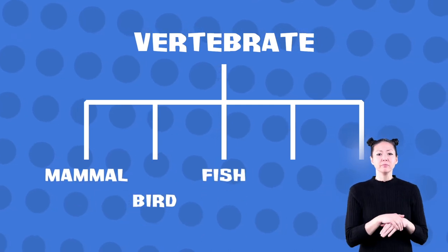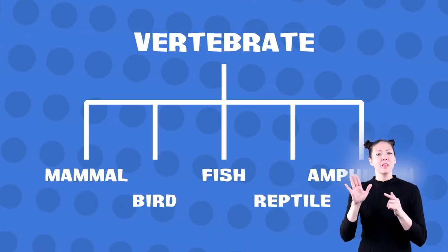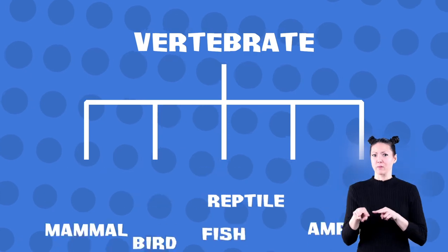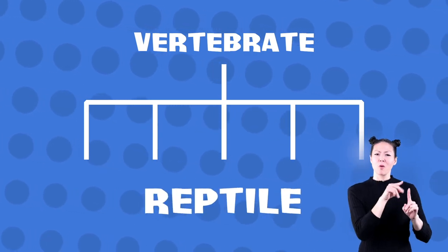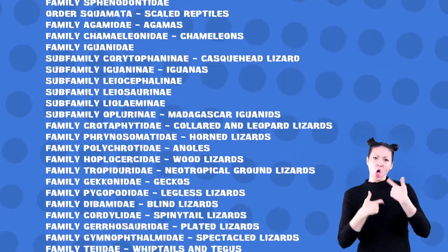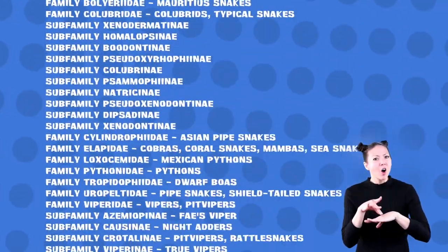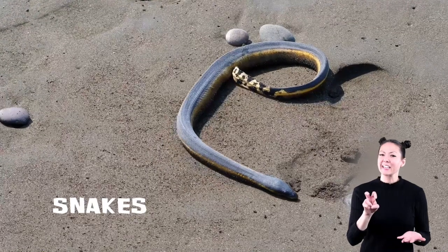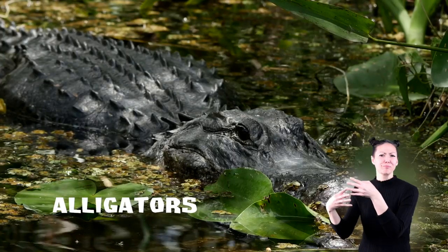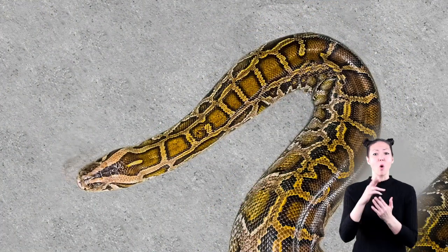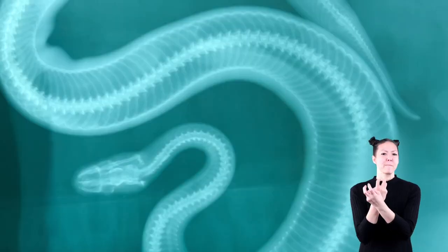There is a lot to learn about all five animal groups, but in this video we're going to learn about reptiles. The reptile group is one of the largest animal groups on Earth. This group includes snakes, lizards, turtles, alligators, and more. All reptiles are vertebrates because they have backbones.